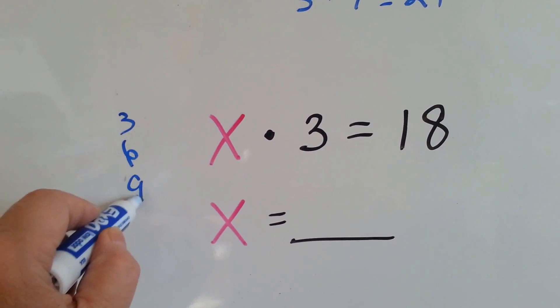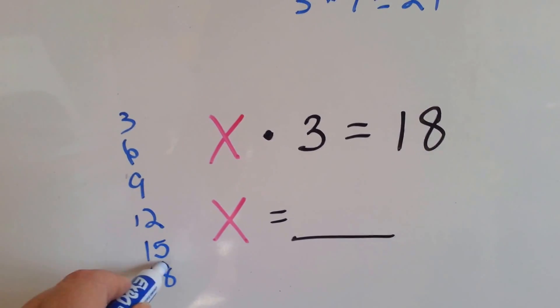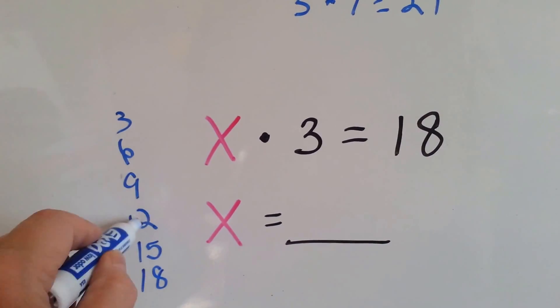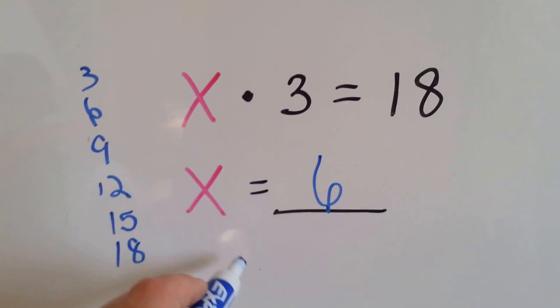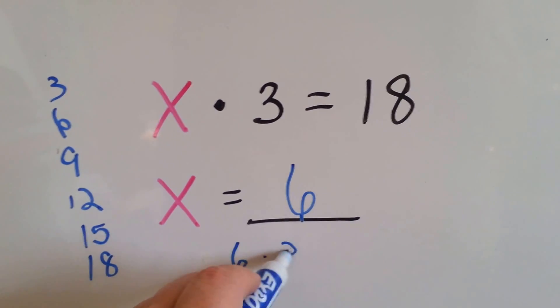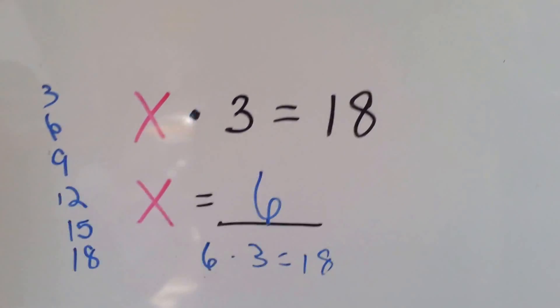3, 6, 9, 12, 15, 18. 1, 2, 3, 4, 5, 6. The x is going to equal 6. 6 times 3 equals 18. So you see how the variable takes the place of the number?